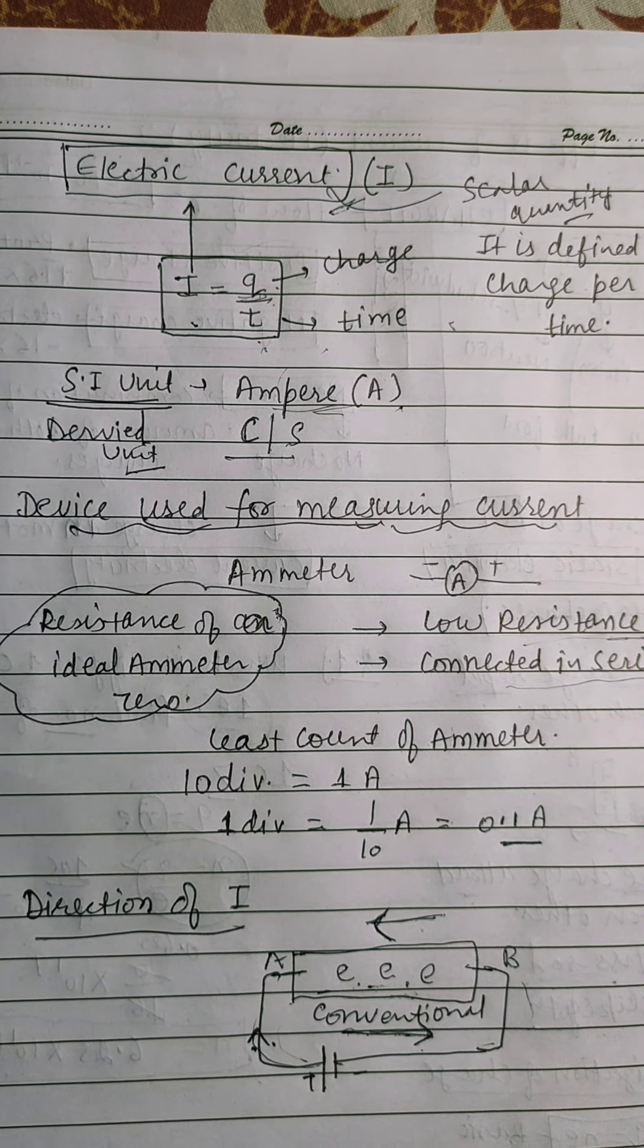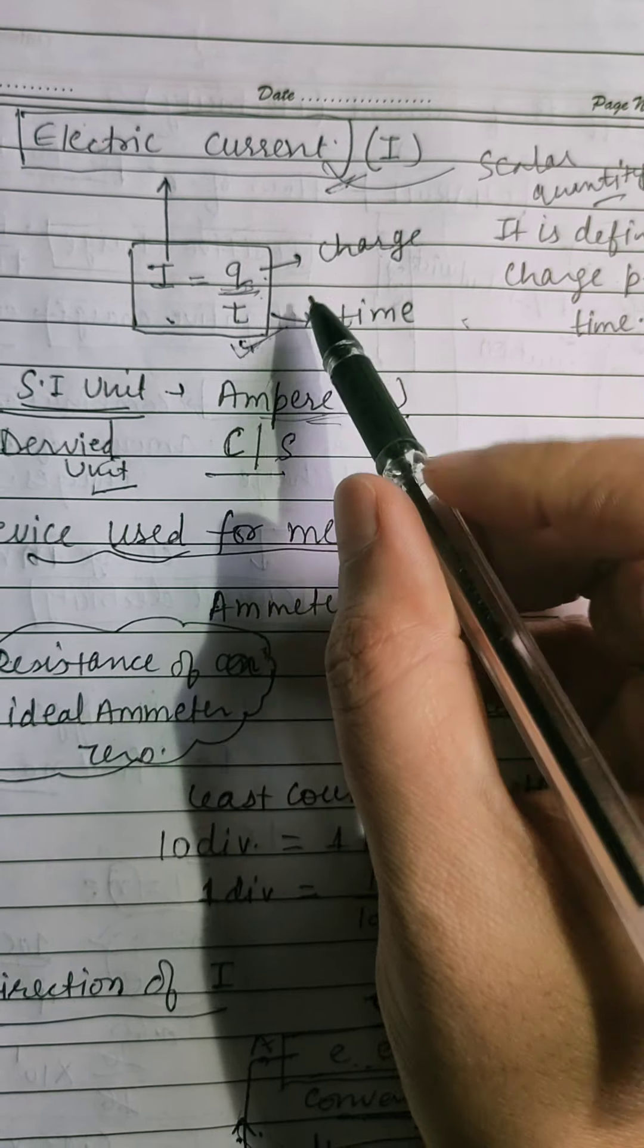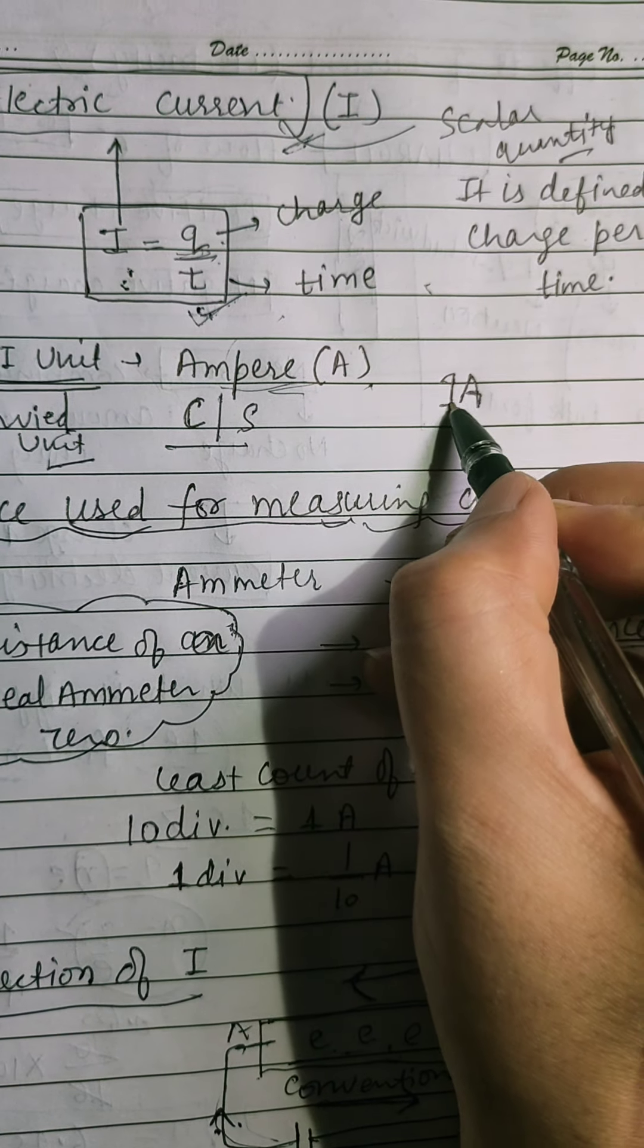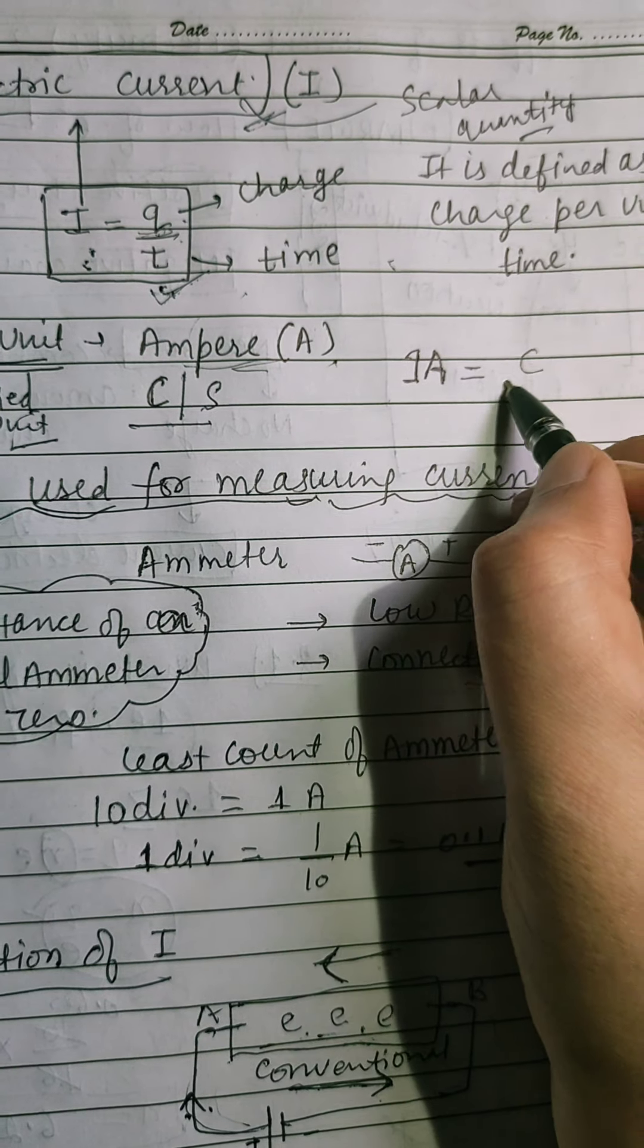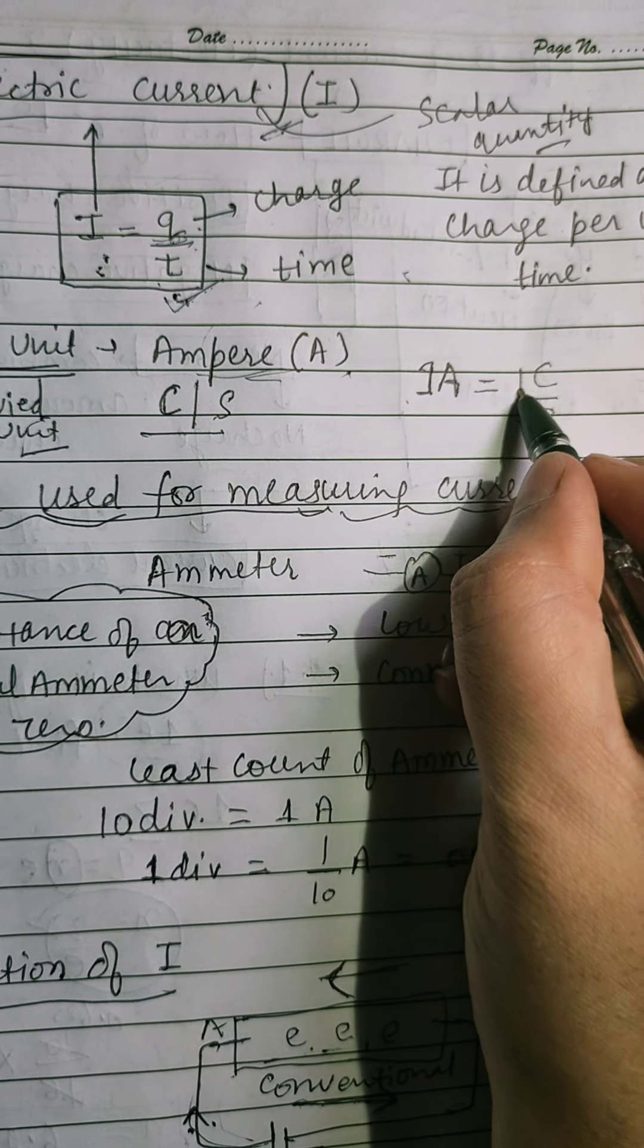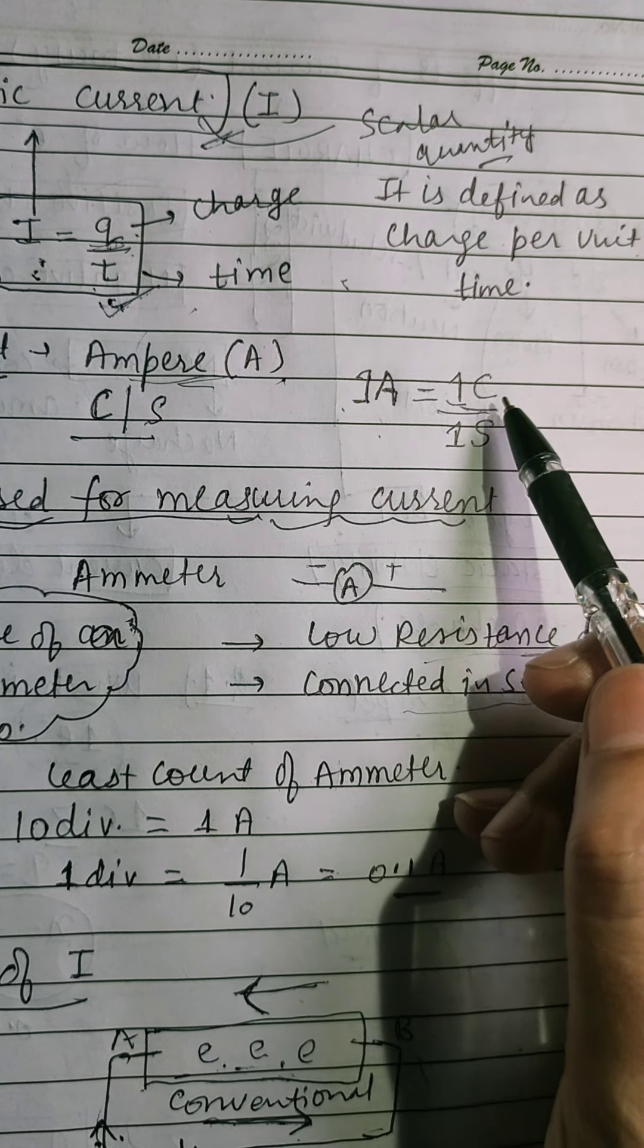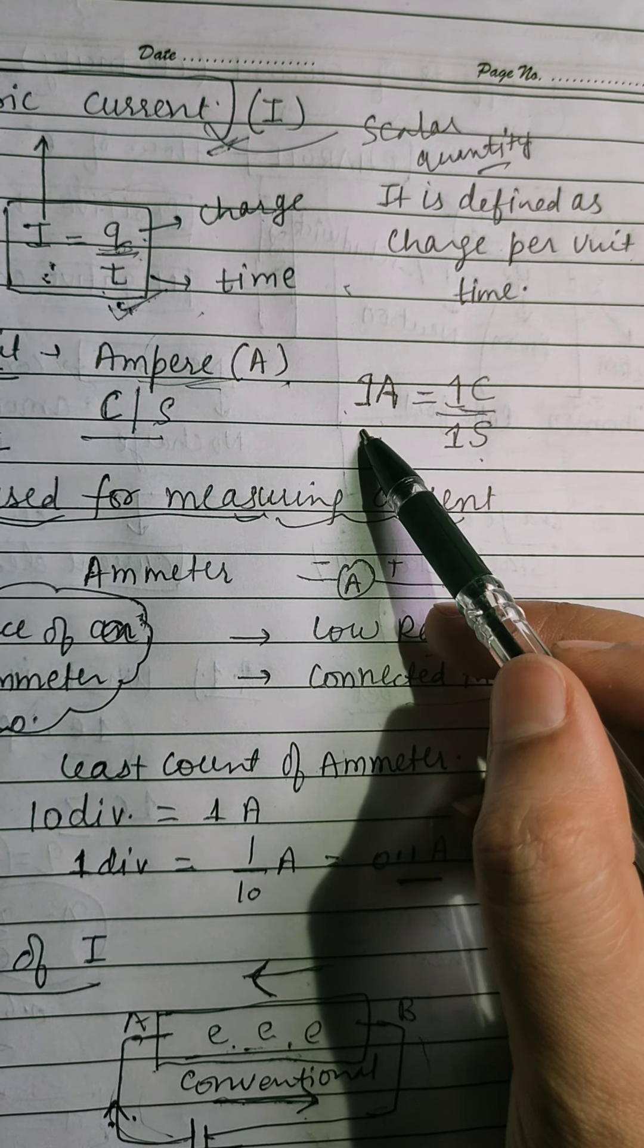Now, we define 1 ampere. According to this formula. I is current here. So, unit of current is ampere. Now, we define 1 ampere. So, we write here 1. And for charge is coulomb. And for time is second. Define 1 ampere. So, if we write 1. 1 ampere is defined as when 1 coulomb of charge flow in 1 second. That is 1 ampere.